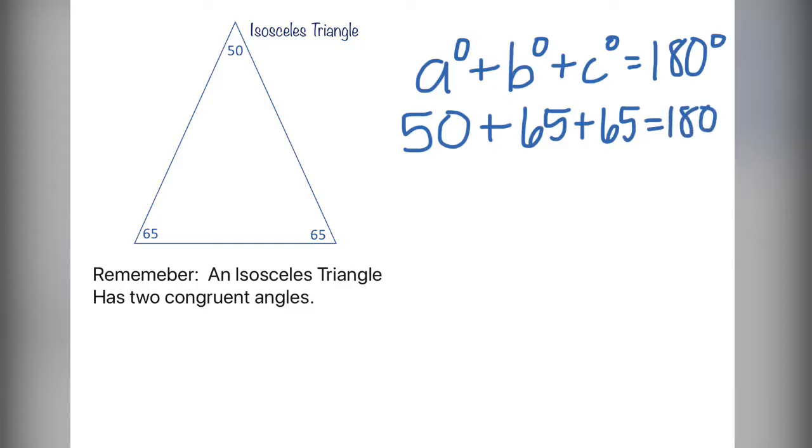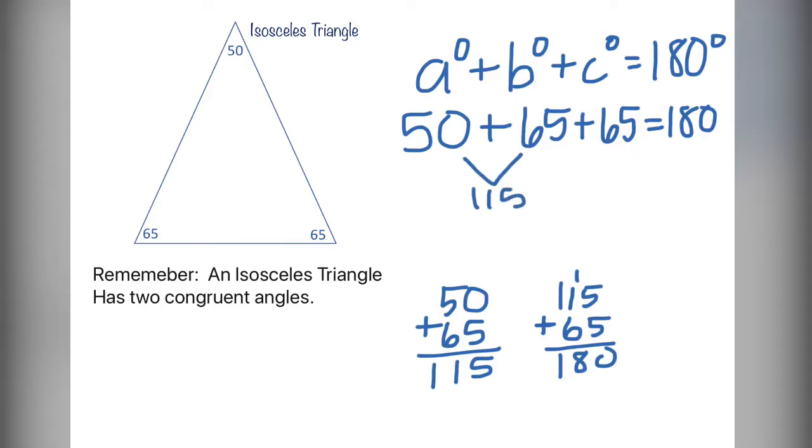We will then add those together. I am doing the math at the bottom to try to eliminate errors. And now I will show you that 50 plus 65 was 115. The 115 plus the other 65 gives me 180, and since 180 equals 180, we proved the theorem correct.